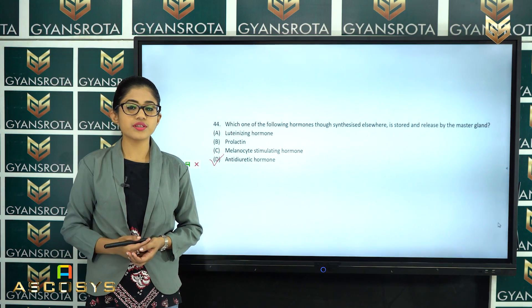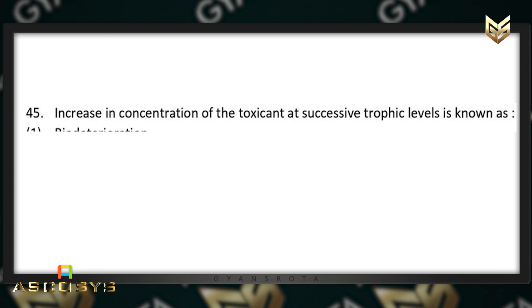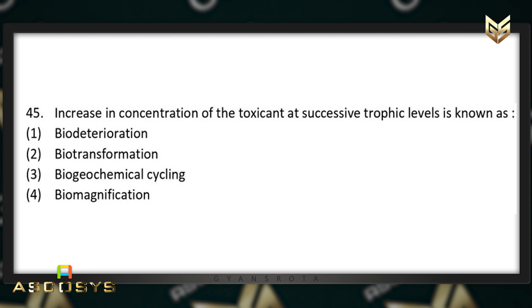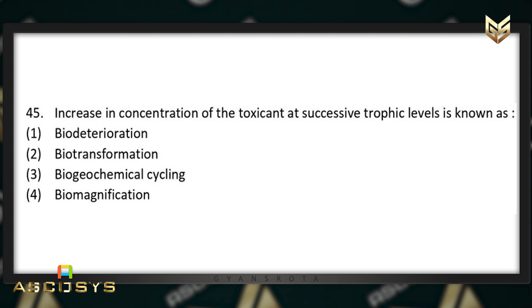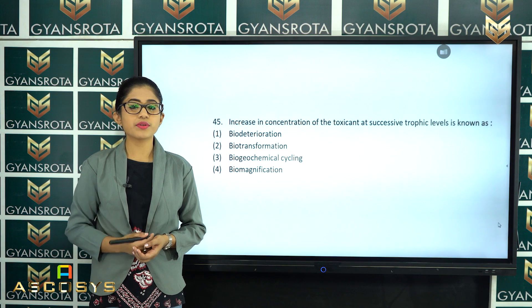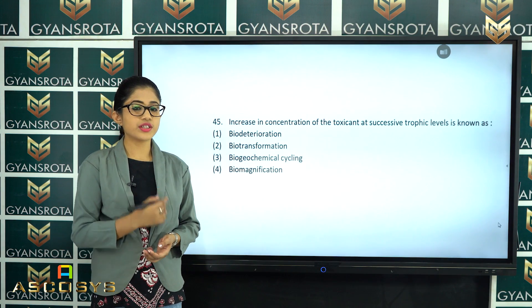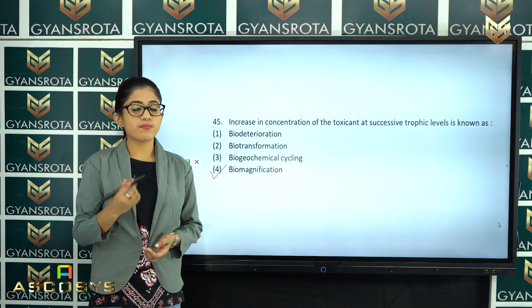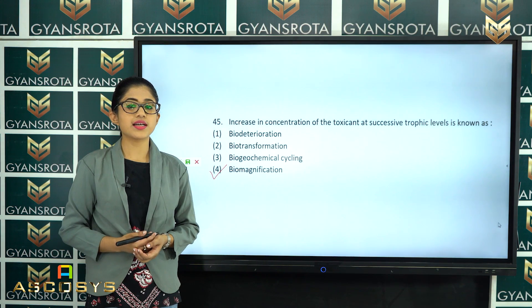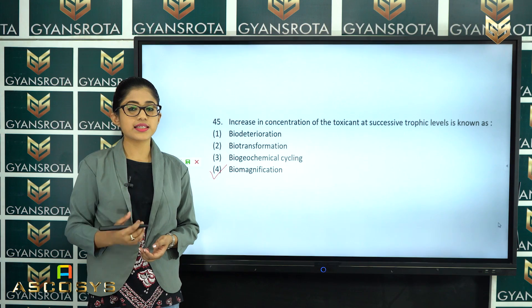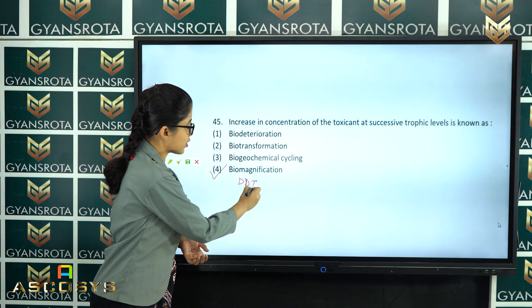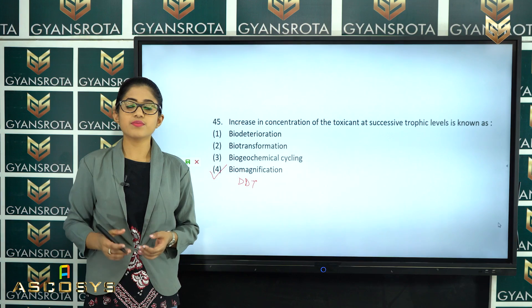The next question is question number 45. Increase in concentration of a toxicant at successive trophic levels is known as bio-deterioration, bio-transformation, bio-geochemical cycling, or bio-magnification? From the chapter Ecosystems, the correct answer is option number 4 — bio-magnification. Bio-magnification is the process in which there is an increase in concentration of a toxicant at successive trophic levels, as discussed with the DDT example.